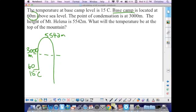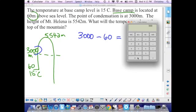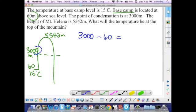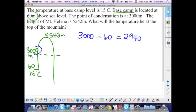So now let's calculate what the temperature will be at the top of Mount Helena. The first thing we need to do, just like before, is calculate the distance from our starting point to our point of condensation. In this scenario, our starting point is actually 60 meters above sea level. So we're going to take our 3,000 meters, which is our point of condensation, and subtract from it 60 meters, which is our base camp level, our starting point. That gives us an answer of 2940 meters.